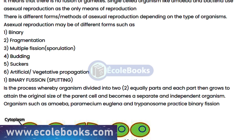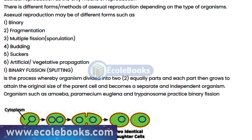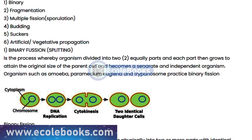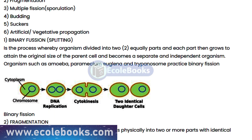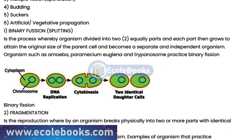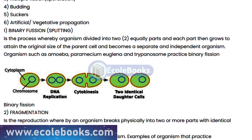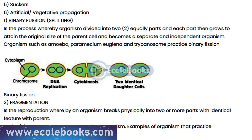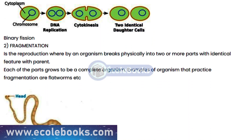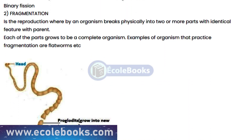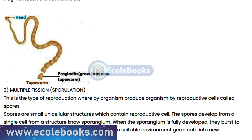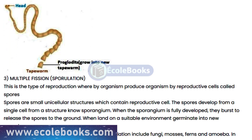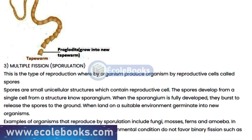In sexual reproduction, there are two main processes: fertilization and syngamy. Fertilization is the fusion of male and female gametes to form a zygote. Syngamy is the fusion of two nuclei in the zygote to form a diploid cell.